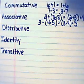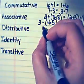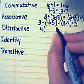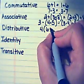The next property is the distributive property. Let's say you start off with 4 times the sum of 6 plus 2.